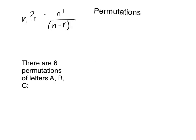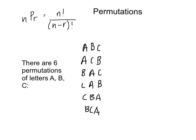So, permutations are used to find out how many different ways we can do something. How many different ways can we arrange A, B, and C? Well, there are six permutations of those letters. These are our six permutations.